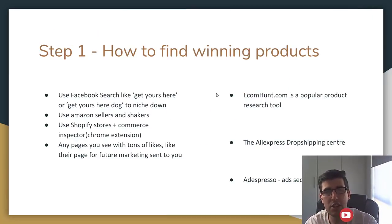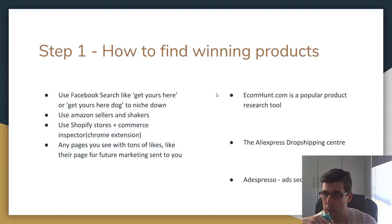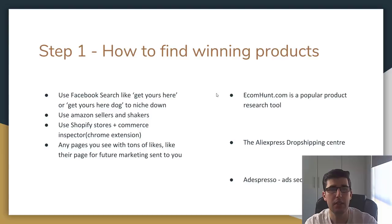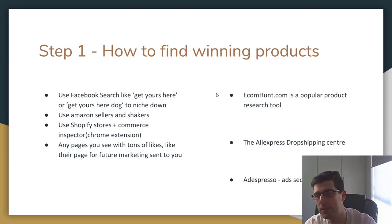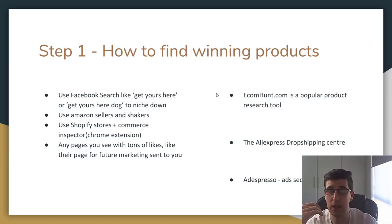Step one is we need to know how to find winning products. If you want to have winning products, you need to know how to find them. I use Facebook search - things like 'get yours here' as a search term. If you want to niche down a bit further to be more specific, and you're in a niche store, you can search more specifically. If you're running a general store, you just go with general items - there are tons of items there.